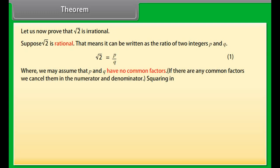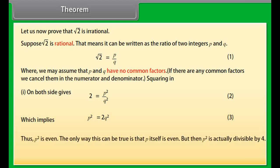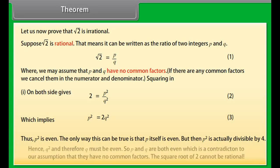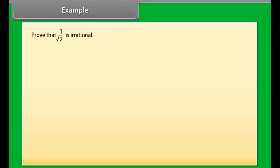Theorem: Let us now prove that square root of 2 is irrational. Suppose square root of 2 is rational. That means it can be written as the ratio of two integers P and Q: square root of 2 equals P upon Q — equation 1. We may assume that P and Q have no common factors; if there are any common factors, we cancel them. Squaring both sides gives: 2 equals P squared upon Q squared — equation 2, which implies P squared equals 2Q squared — equation 3.